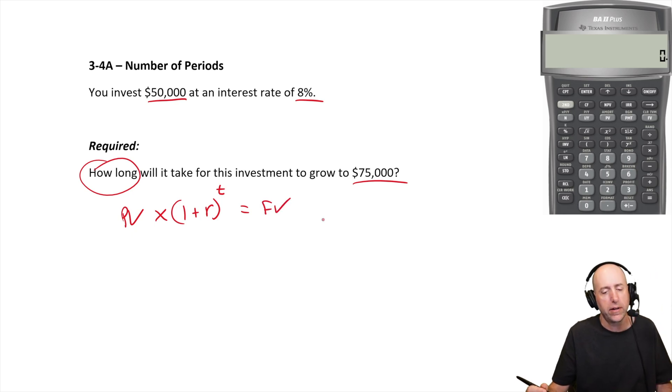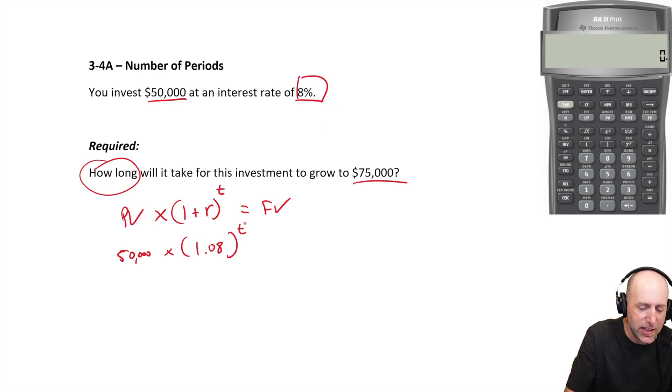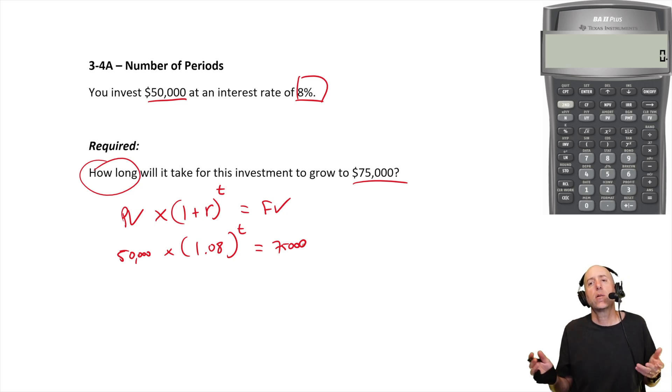So plugging things in here, it's $50,000 times 1 plus the rate of interest 1.08 - our rate is 8% - raised to the power of t. That's what we're solving for. We don't know the number of periods. This equals our future value $75,000.